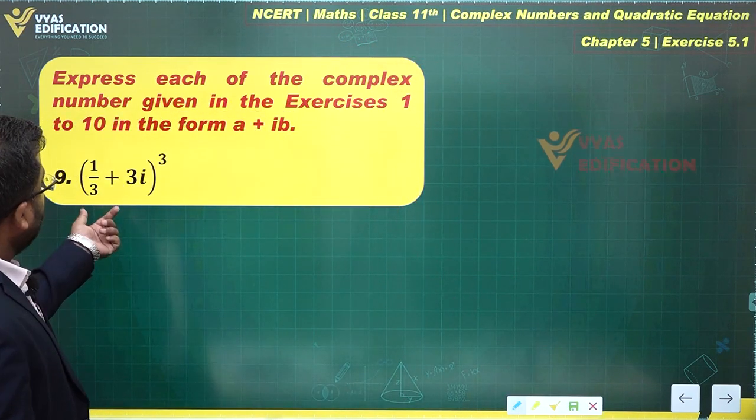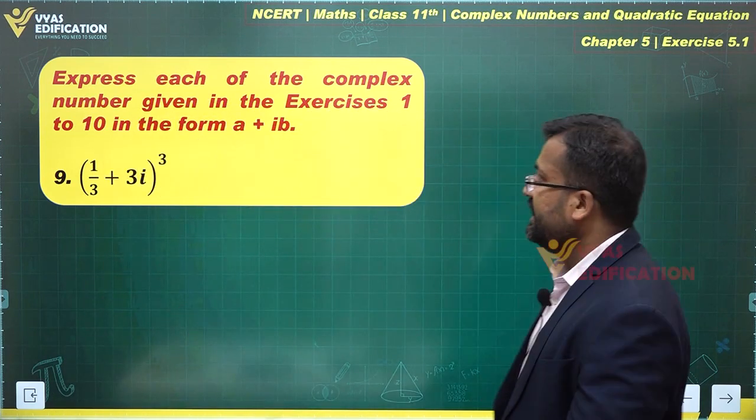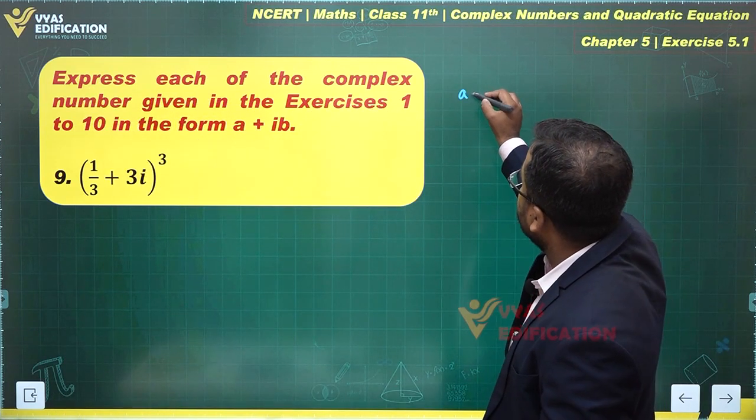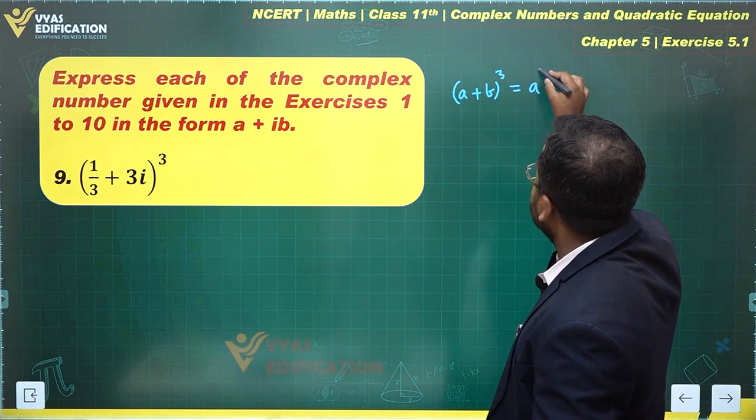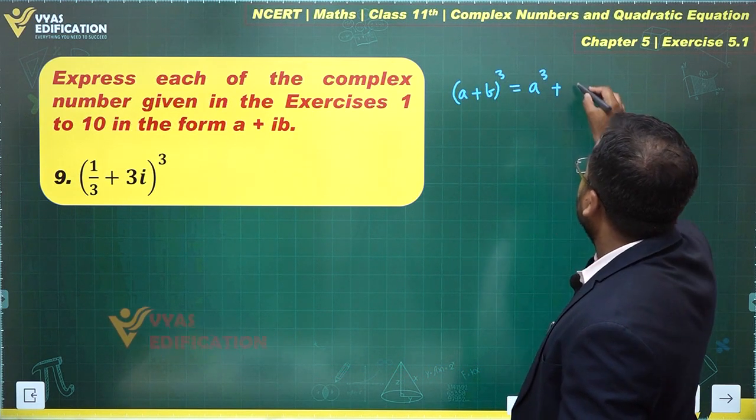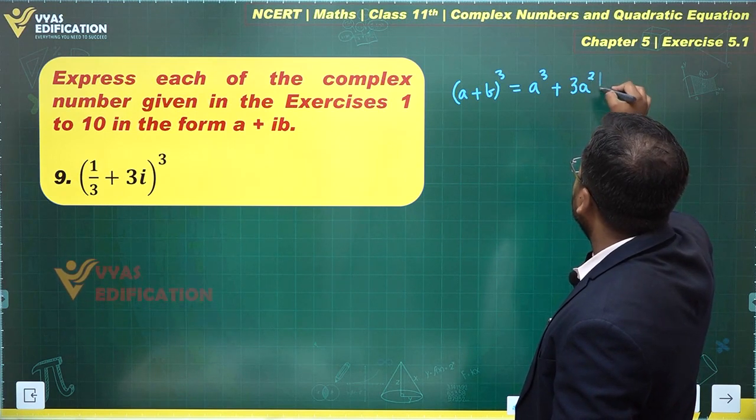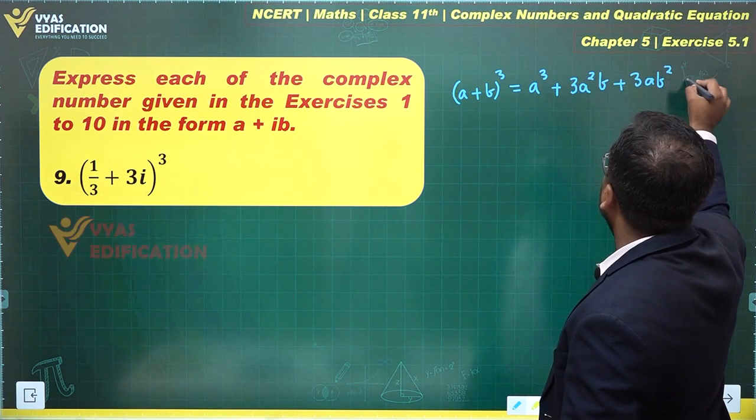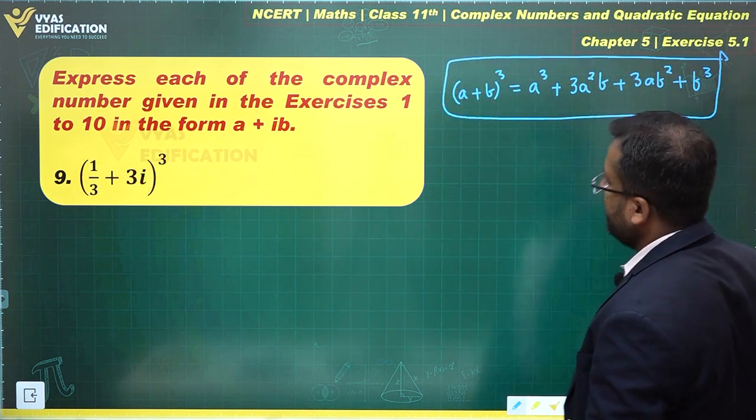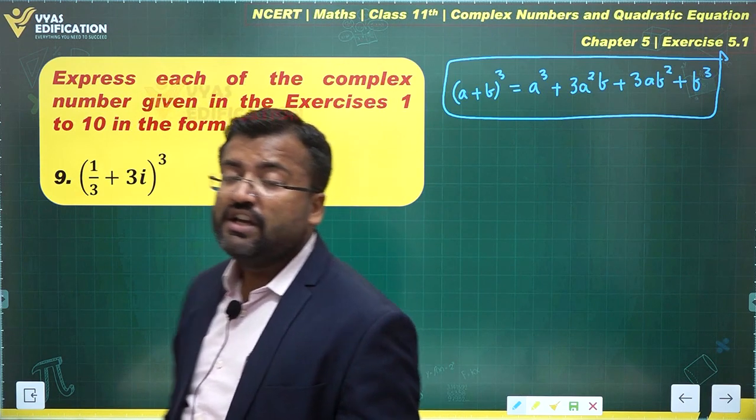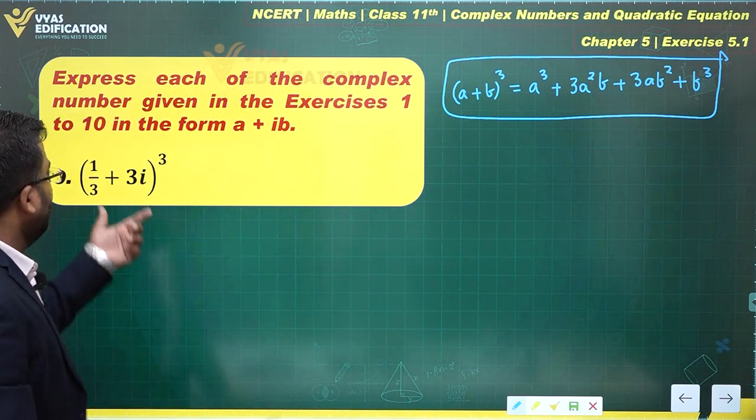Let's use this identity. (a+b)³ equals a³ + 3a²b + 3ab² + b³. This is what the identity looks like, so let's use that and simplify this expression.